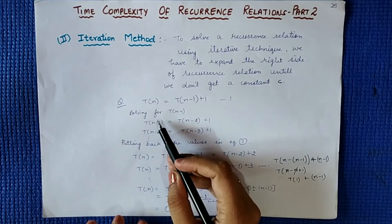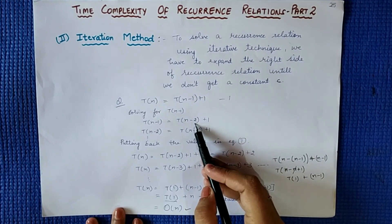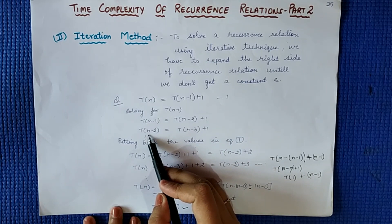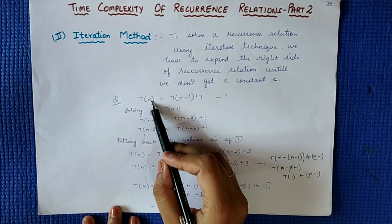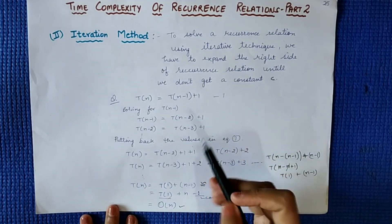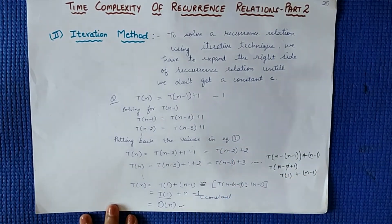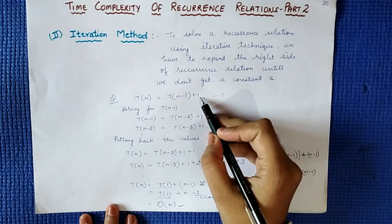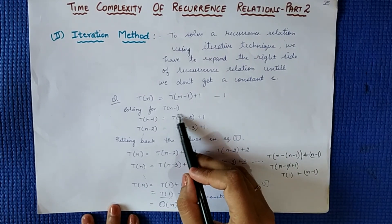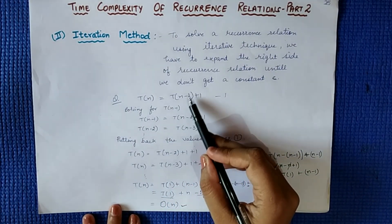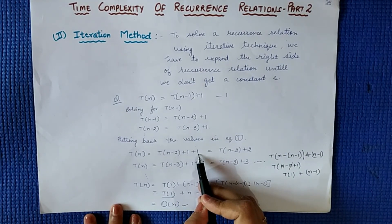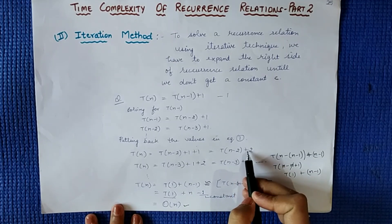When we substitute N-1, T(n-1) becomes T(n-2) + 1. Then, what will be the value of T(n-2)? Putting N-2 in place of N, T(n-2) = T(n-3) + 1. After doing this, if we put these values back into the main equation, T(n) becomes T(n-2) + 1 + 1, which gives us T(n-2) + 2.